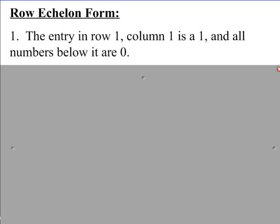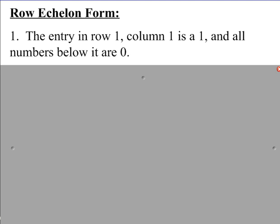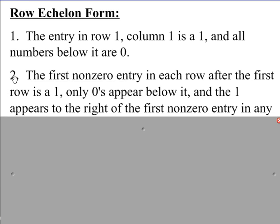Why are we trying to do this? One way to help us solve a system using matrices is to get our matrix representing our system into what's called row echelon form. Row echelon form requires that the entry in row 1, column 1 is a 1, and then all numbers below it are 0. If we look at our system right here that we just created, row 1 column 1 is a 1, and everything below it is a 0. So right now we have the first condition of row echelon form.